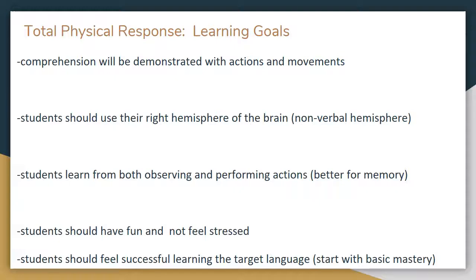For the learning goals of the Total Physical Response method, one goal is that comprehension — understanding the meaning of what the speaker said, or eventually what an author says in a text — will be demonstrated by students' actions and movements. Also, initially students should use their right hemisphere of the brain, which is the nonverbal hemisphere, when learning the language. Then later they use both hemispheres of the brain when they become more advanced.